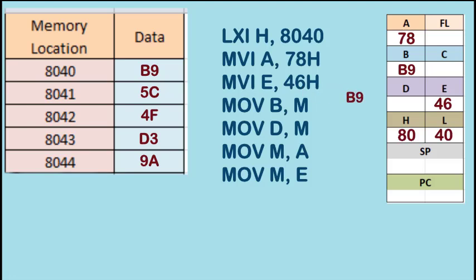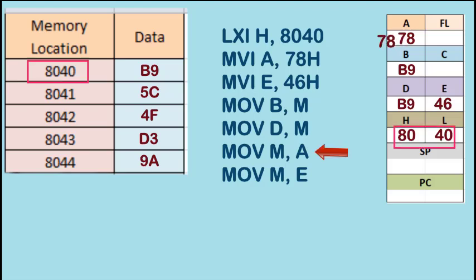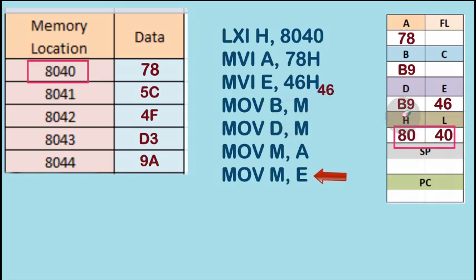The next instruction is MOV M,A. With MOV M,A, the data stored in register A, which is 78, will be stored in memory location M pointed by the HL register pair. So 78 gets stored in location 8040. Similarly, the data in E gets stored in that particular memory location. In all these data transfer operations, no flags are affected. That's all for this particular session, thanks for watching.